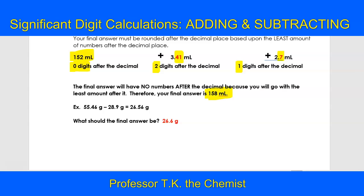In this example here, you've got 55.46, so you've got two numbers after the decimal. In this first digit you've got one number after the decimal in the second digit. Your calculator is going to give you 26.56, but you must remember the rules—it says to go with the least amount of digits after the decimal.